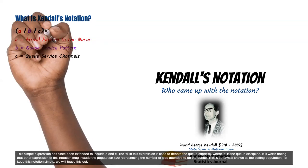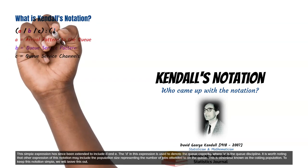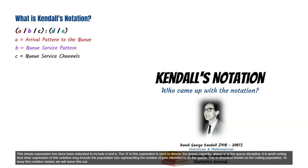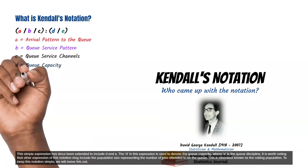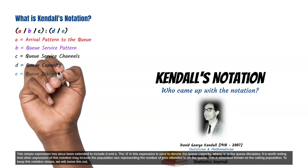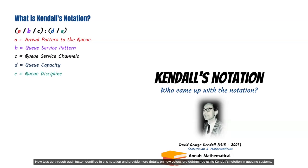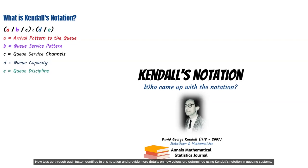This simple expression has since been extended to include D and E. The D in this expression is used to denote the queue capacity, where E is the queue discipline. It is worth noting that other expressions of this notation may include the population size, representing the number of jobs attended to on the queue, otherwise known as the calling population. To keep this notation simple, we will leave this out. Now let's go through each factor and provide more details on how values are determined using Kendall's Notation in queuing systems.